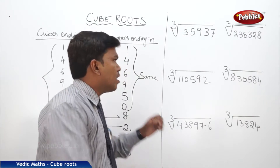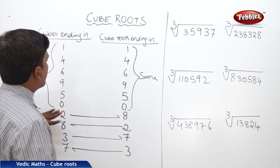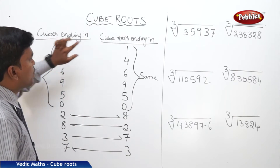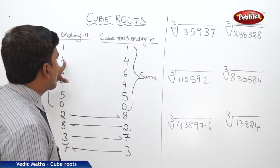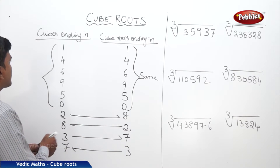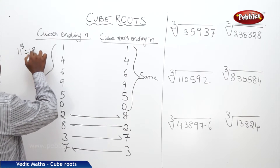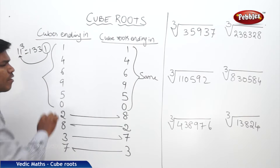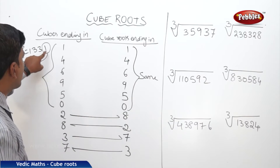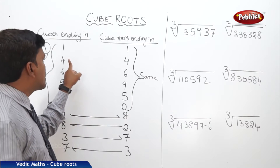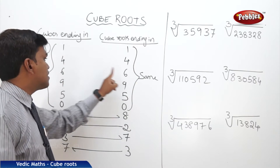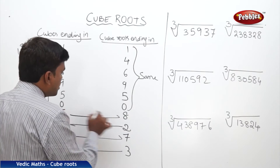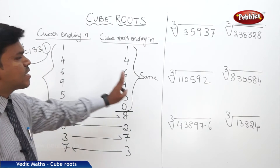Let us discuss the table now. Suppose these are the set of cubes ending in certain digits, and these are the cube roots ending in corresponding digits. If a cube number is ending in 1, its cube root should also end in 1. For example, 11 cubed is 1331 — it ends in 1, and its cube root also ends in 1. Similarly, for digits 4, 6, 9, 5, and 0, the cube root ends in the same digit.